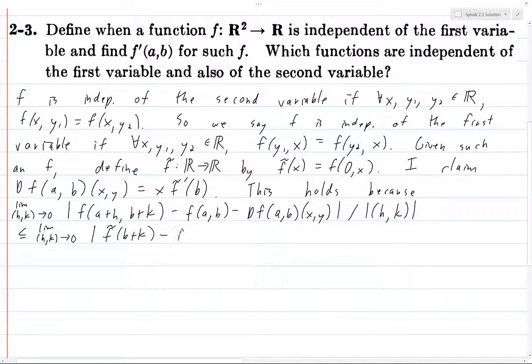So this becomes just f tilde of B plus k. Similarly, we get f tilde of B here, and then, well we have the formula for dF at AB, just going to be x times